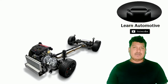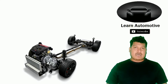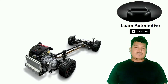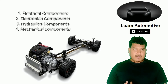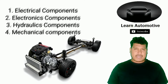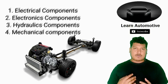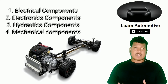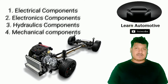The structure of a car has broadly four categories: the first one is electrical, then electronics, mechanical, and hydraulics. These are the four categories under which all the components consist.